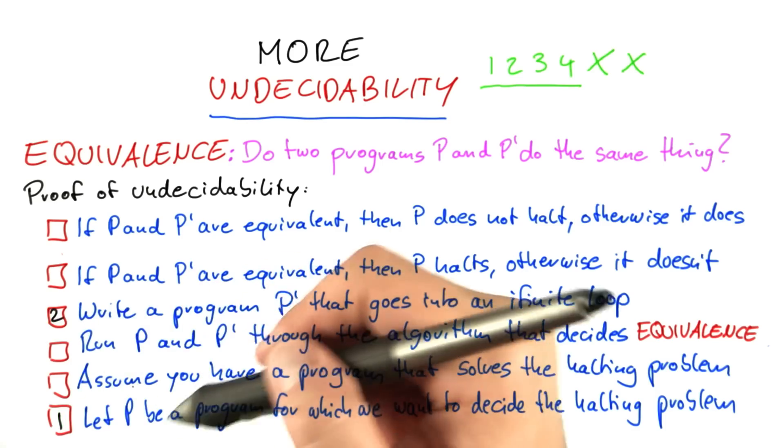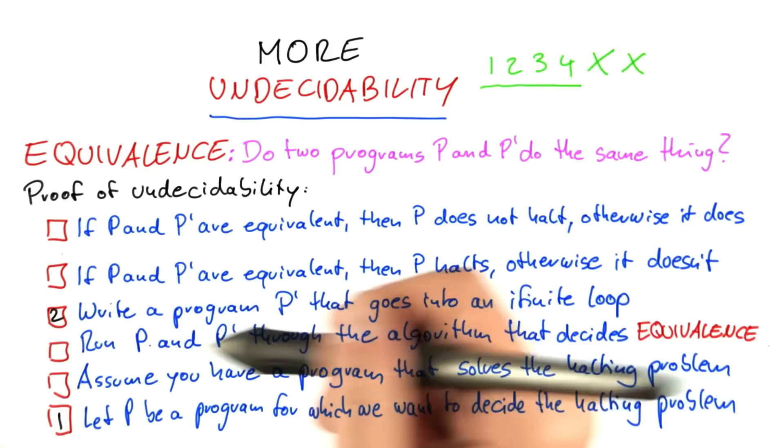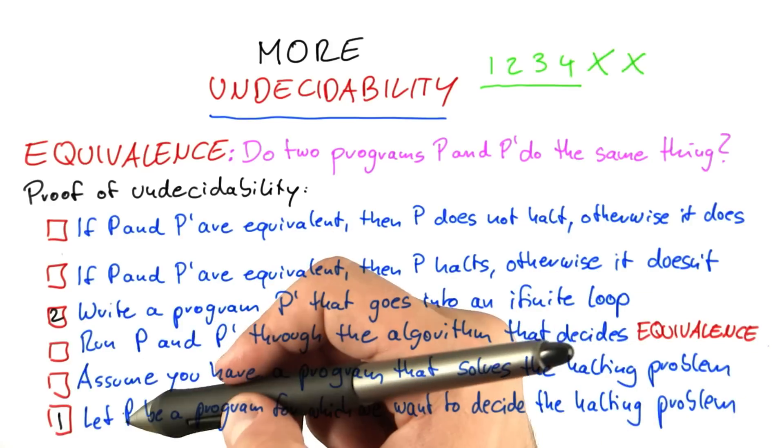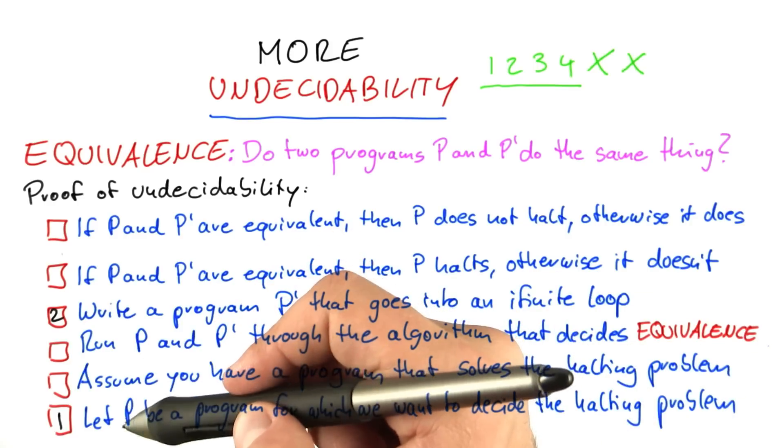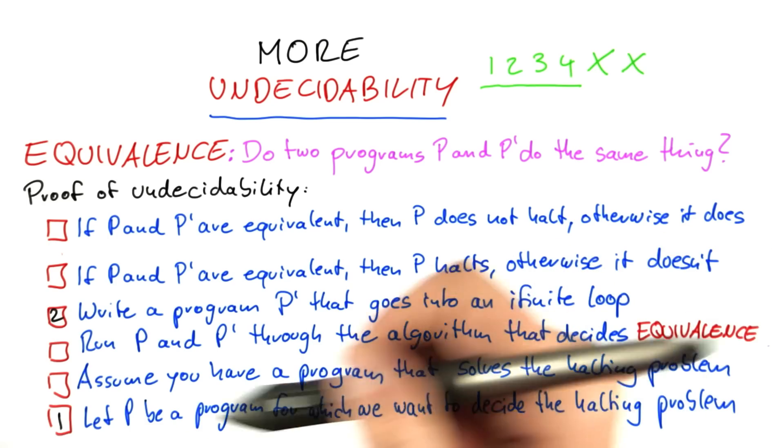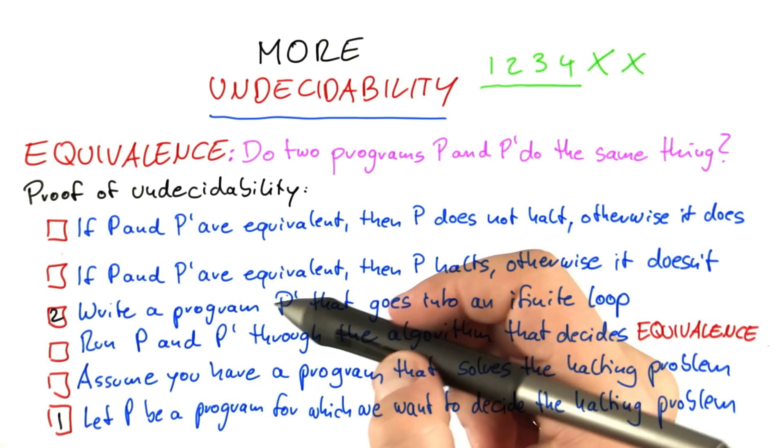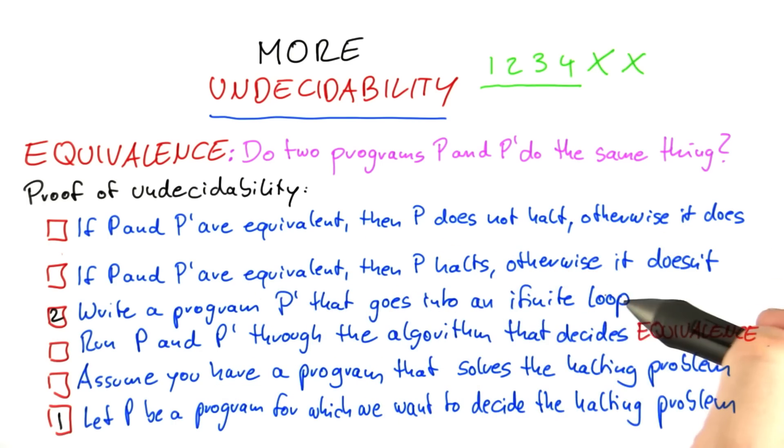Once we have those two programs, p and p', we run them through the algorithm that decides equivalence. And what that will do is it will basically ask, does the program p, for which we want to decide the halting problem, do the same thing as a program that always goes into an infinite loop?